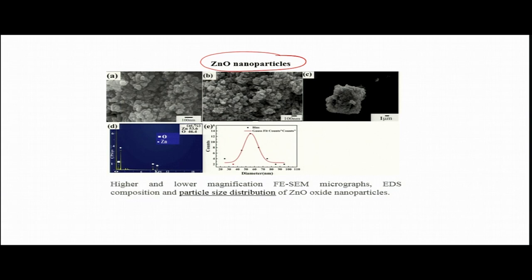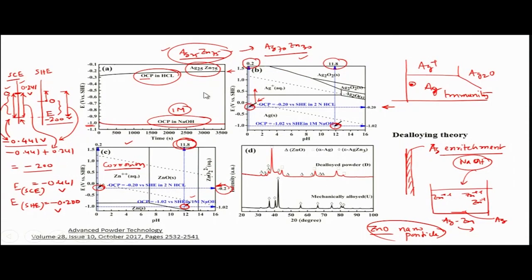This illustrates why learning the Pourbaix diagram is very important: it explains the preferential dissolution of zinc, the formation of silver nanoporous particles, and allows recovery of zinc in the form of zinc oxide nanoparticles, which have many practical uses. The Pourbaix diagram can explain many practical corrosion phenomena and guide real experimental outcomes.